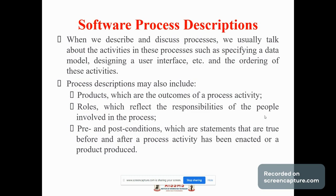There are some software process descriptions. The first one is product, the second one is role, and the third one is pre and post conditions. Products are the outcomes of process activities. Roles reflect the responsibilities of the people involved in the process. Pre and post conditions are statements that are true before and after a process activity. When we describe and discuss processes, we usually talk about the activities in the process, for example, modeling, designing, and user interfaces.